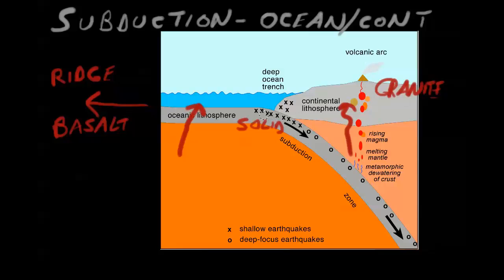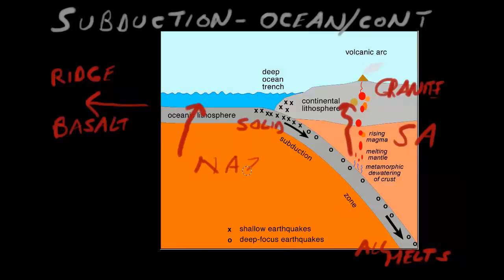Along the subduction zone you get shallow earthquakes, and deeper down you get deeper earthquakes. Once all the crust melts, you're not going to get any earthquakes at all because the subducting crust has melted. A good example of this is the Nazca plate off the west coast of South America interacting with the South American plate.